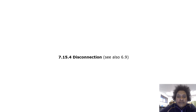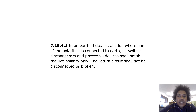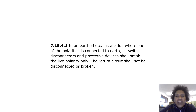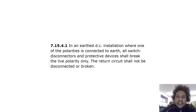Disconnection: in an earthed DC installation where one of the polarities is connected to earth, all switch disconnectors and protective devices shall break the live polarity only. The return circuit shall not be disconnected or broken.